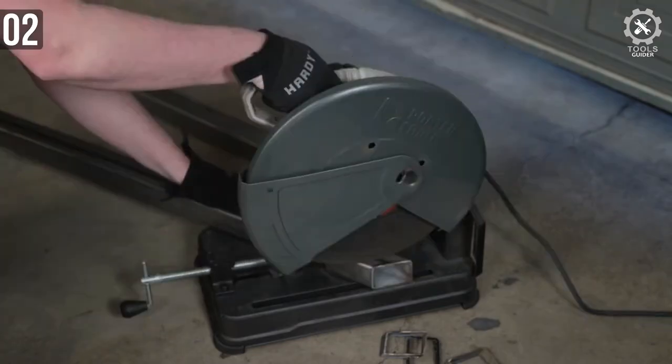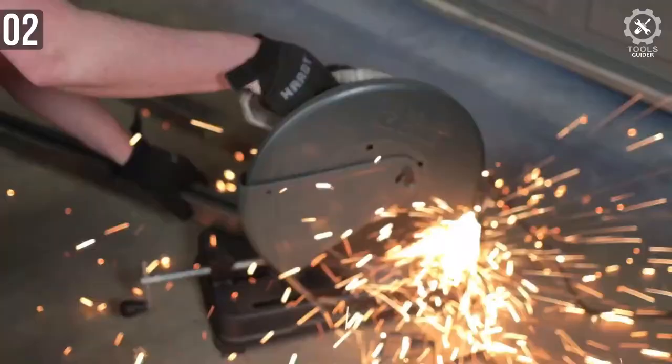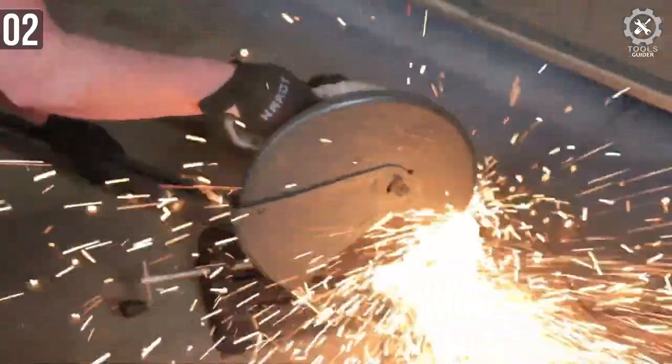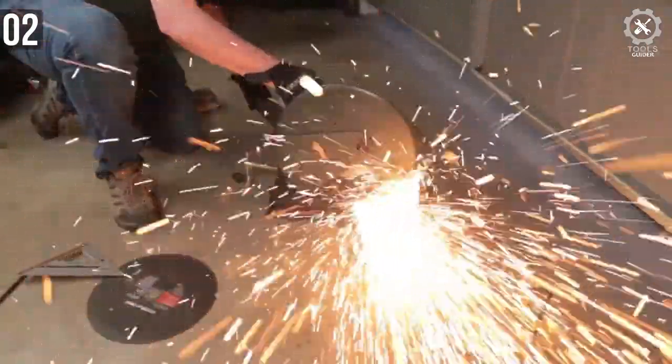You also get useful features like an anvil spark deflector in this chop saw that protects you from flying sparks. Its heavy-duty steel base keeps the chop saw quite stable while cutting metal. And you get a quick-release material clamp that offers ease of use.